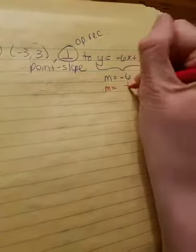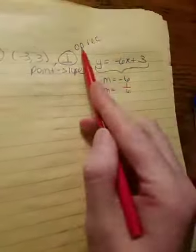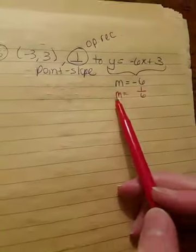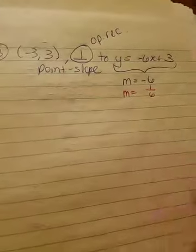Well, the reciprocal of 6 is 1 sixth, and then they have to be opposite. So if this one's negative, this one has to be positive. So our new slope is 1 sixth, and it has to go through the point (-3, 3).